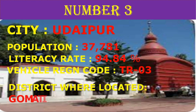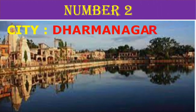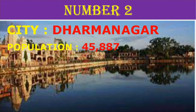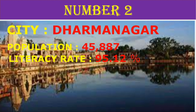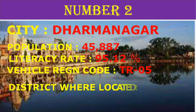Number 3: District where located Gomati. Number 2: City Dharmanagar. Population 45,887. Literacy rate 95.12%. Vehicle registration code TR-05. District where located: West Tripura.